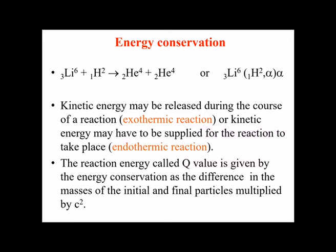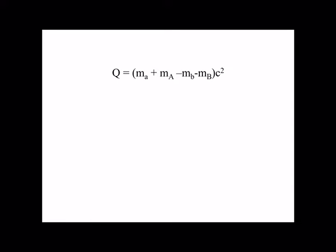The reaction energy — called the Q value — is given by energy conservation as the difference in mass of the initial and final particles multiplied by c². Mathematically, the Q value is defined as the difference of the masses of the reactants and the products, multiplied by c².